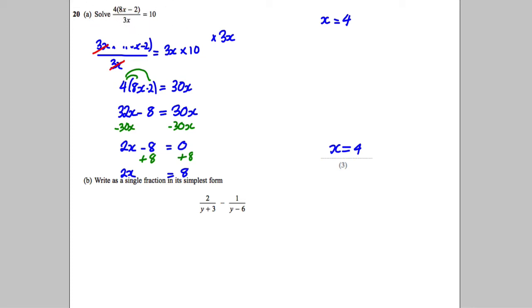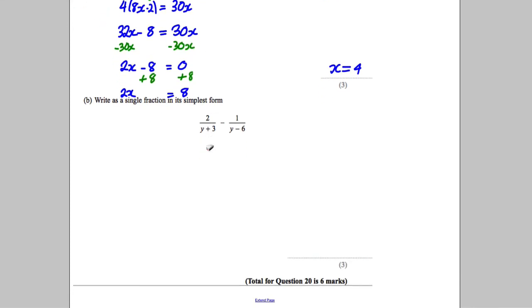The next one: Write as a single fraction in its simplest form. You're subtracting fractions here. When it's with numbers, if I asked you what 2/5 subtract 1/3 is, you would make the denominators the same. So we need to do that here. The common denominator is the product of (y + 3) and (y - 6).